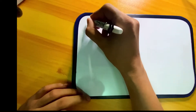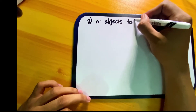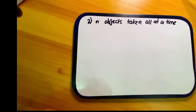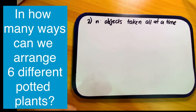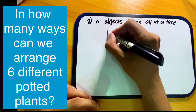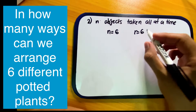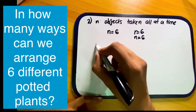The second kind of permutation is n objects taken all at a time. For example: in how many ways can we arrange six different potted plants? We can say n equals six and r also equals six — they are equal. So r is the same as n.